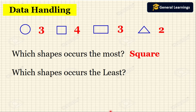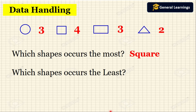Next, which shape occurs the least? Least means which shape is occurring less number of times. Here circle is three, so the answer will be triangle, which occurs two times.